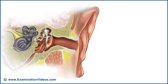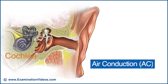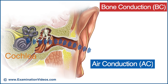Sound is delivered to the cochlea of the inner ear by two conduction pathways. In air conduction, the sound is gathered by the external ear, funneled by the external auditory canal to the tympanic membrane, and onward to the inner ear via the ossicles. In bone conduction, the sound is transmitted directly through the bones of the skull to the inner ear, bypassing the air conduction pathway.